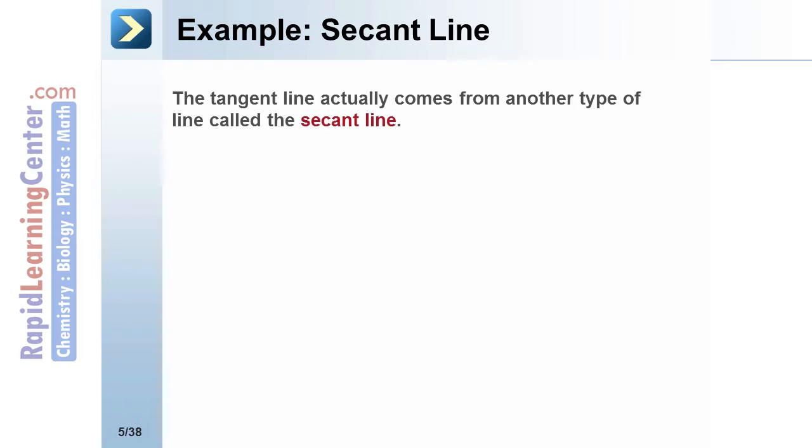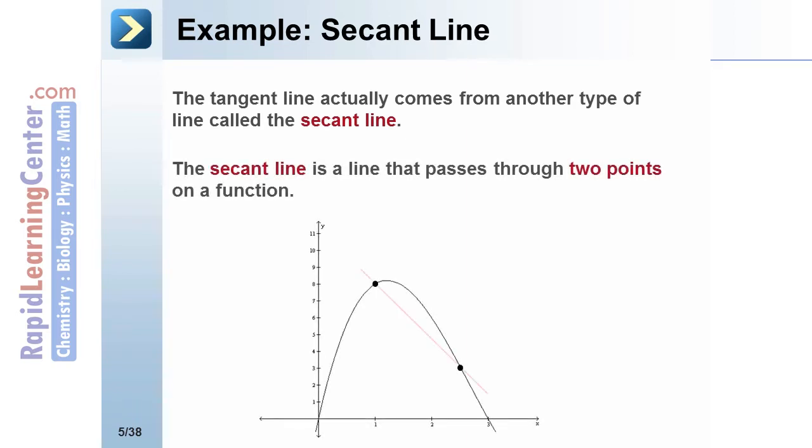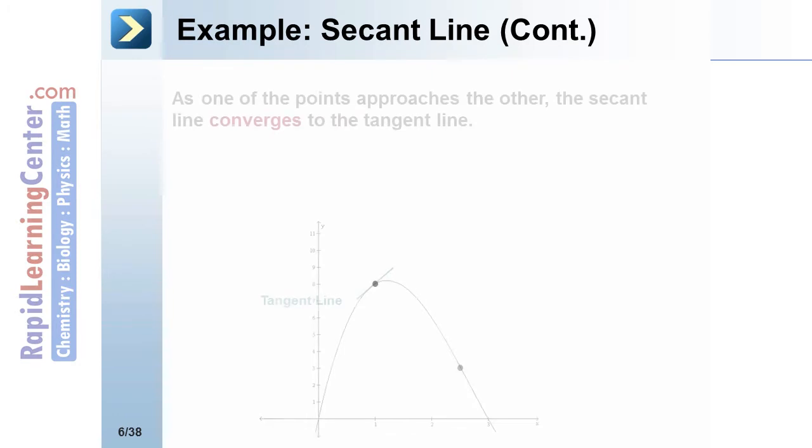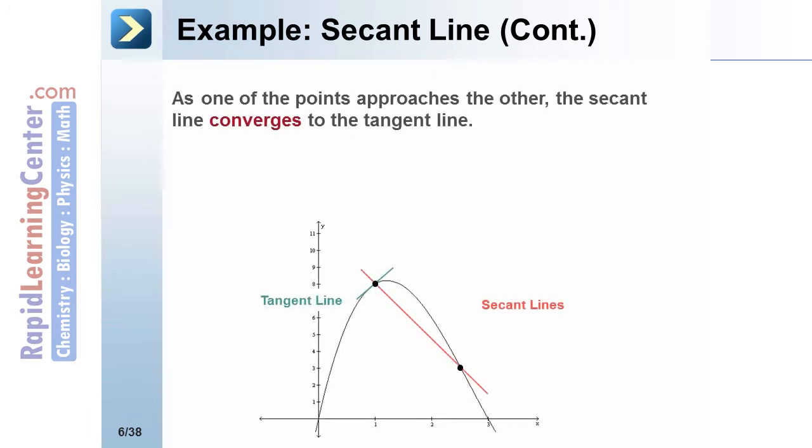Let's look at an example of a secant line. The tangent line actually comes from another type of line called the secant line. The secant line is a line that passes through two points on a function. As you can see from this curve we have a line drawn through the two points. This line is the secant line. As one of those points approaches the other, the secant line converges to the tangent line. The points move closer and closer together until the second point is on top of the first. That's when the secant line becomes the tangent line.